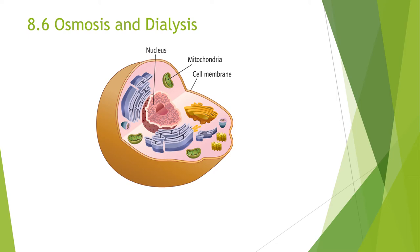In this section, we will learn about the behavior of solutions separated by a selectively permeable membrane such as a cell membrane. We will describe the permeability of the cell membrane and then consider two important processes that describe whether solutes can cross a selectively permeable membrane or not. These two processes are osmosis and dialysis.